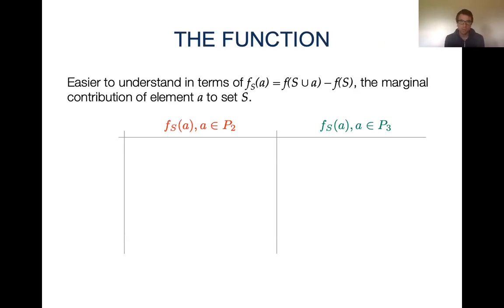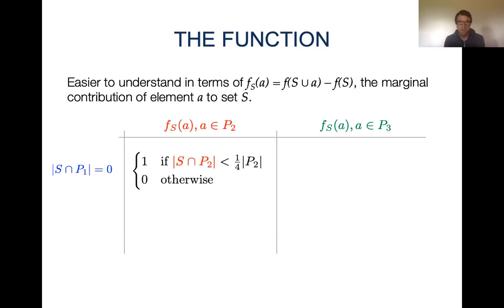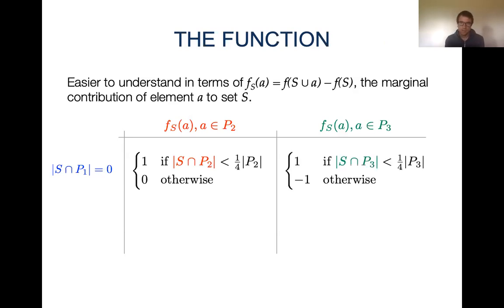Let's look at the marginal contribution of an element a to a set S for elements in P2 and P3. We want P3 to be the optimal solution and we want elements in P2 and P3 to be indistinguishable. First, consider the case where we have no elements from P1 in set S. If S contains a small number of elements from P2, the marginal contribution of an element from P2 is 1, and 0 otherwise. Similarly for elements in P3, except that if S contains a large number of elements from P3, the contribution of element a is negative 1.